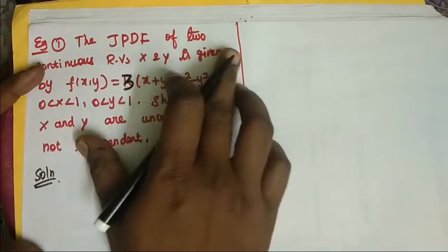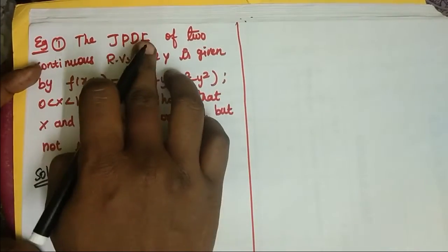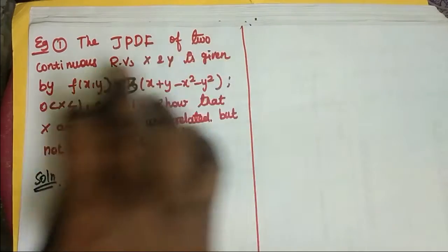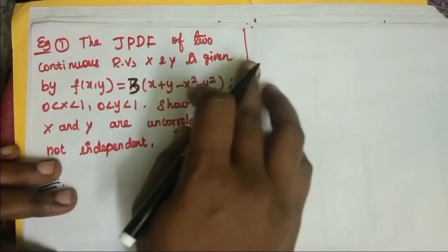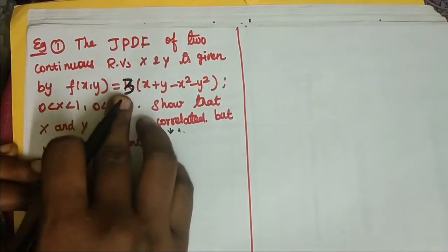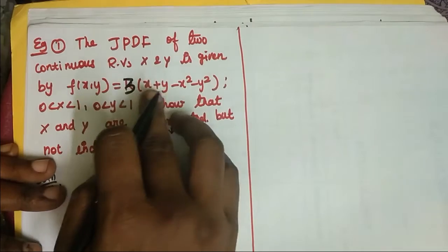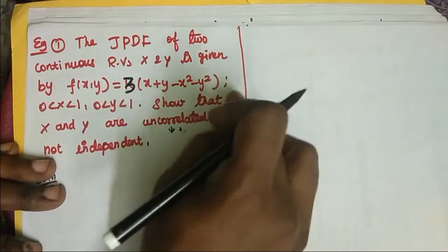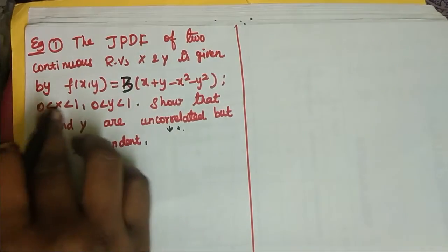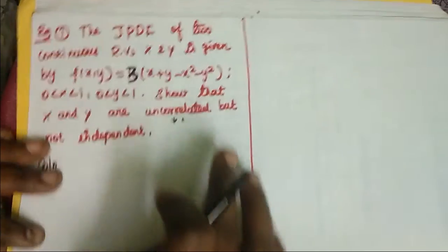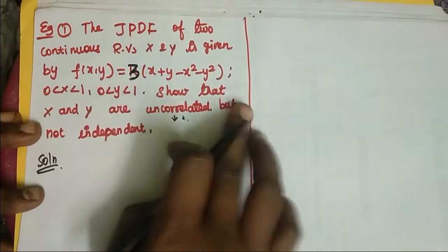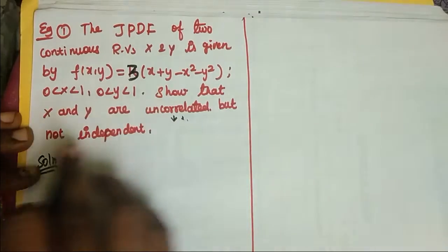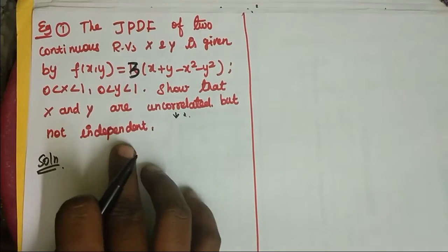Let us solve this problem. The JPDF of 2-dimensional continuous random variables is given by f(x, y) equal to 3 times (x plus y minus x squared minus y squared), with limits 0 to 1 for both x and y. We need to show that x and y are uncorrelated but not independent.